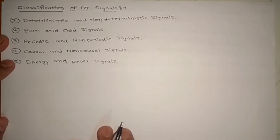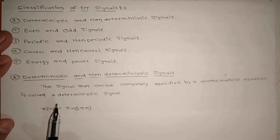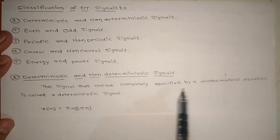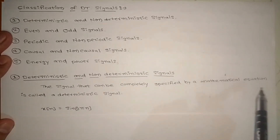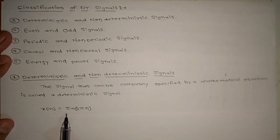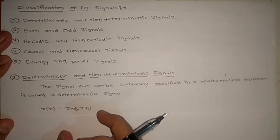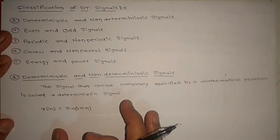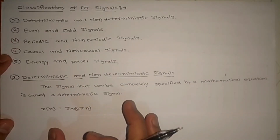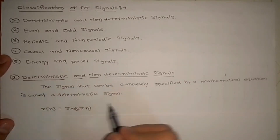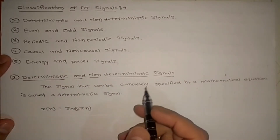Deterministic and non-deterministic signal. A deterministic signal means the signal that can be completely specified by a mathematical equation is called a deterministic signal. That is x of n equal to sin(2πn). If we are able to write a mathematical equation, we will call it a deterministic signal; otherwise, we will call it a non-deterministic signal. This we already learned in continuous time signal.